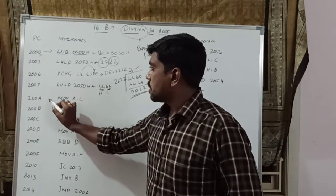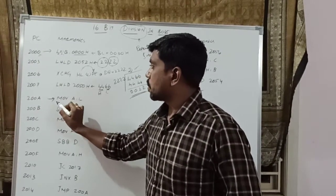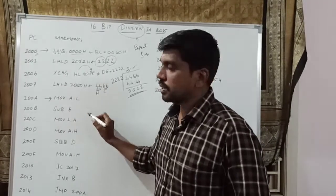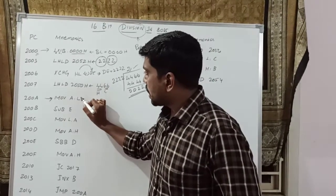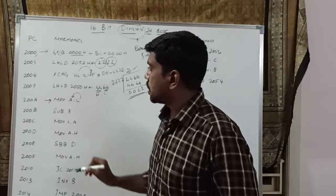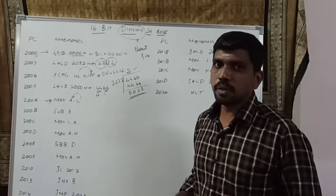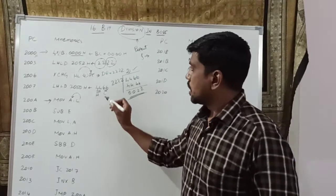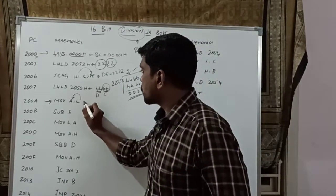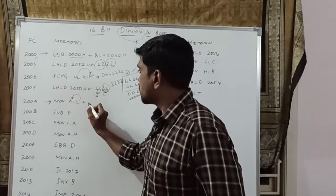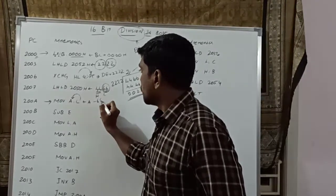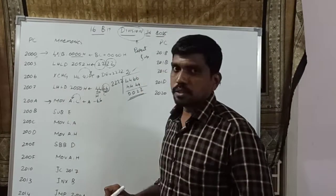At program counter 2008H, it points MOV A, L. Whatever value is present in the L register, that content is transferred to the A register. The L register content is 66H. After execution of this instruction, A value equals 66H.